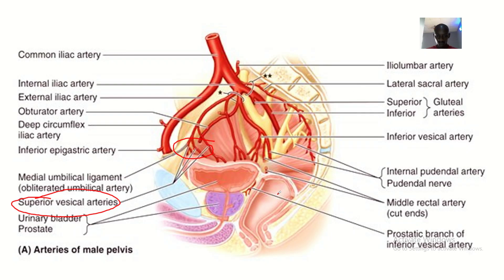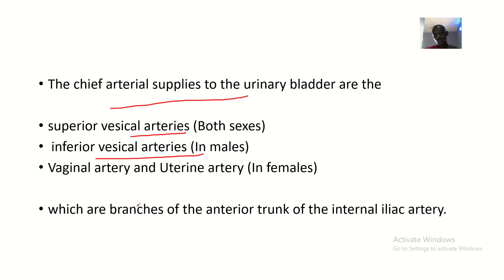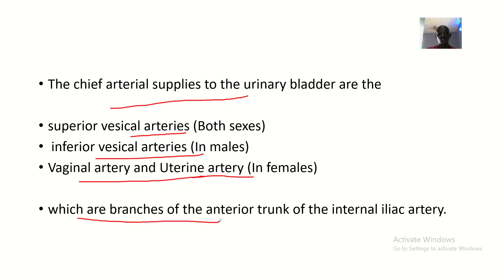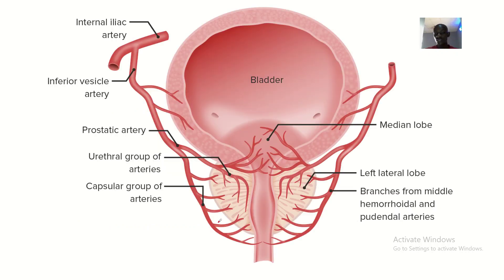Then there are the inferior vesical arteries, which are found in males only — this is a male specimen. In females, the inferior vesical artery is replaced by the vaginal artery and the uterine artery. All of these are branches of the anterior trunk of the internal iliac artery. So to repeat: superior vesical artery is the main arterial supply; inferior vesical artery is in males, while vaginal and uterine arteries are in females.